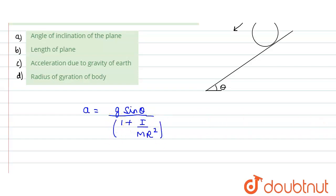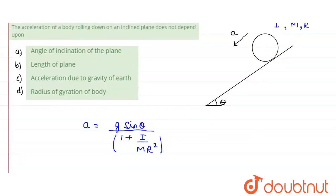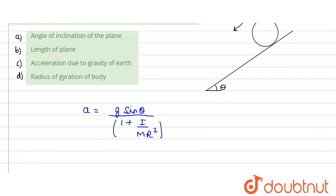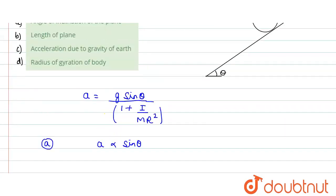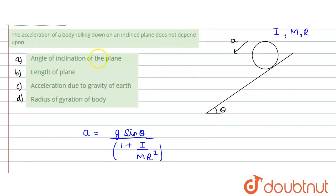Now we need to find whether acceleration is dependent upon the angle of inclination. We can see that acceleration is directly proportional to sine of theta — not proportional to theta itself, but to sine of the angle. So yes, it is dependent on the angle. We need to find what it does NOT depend on, so option A cannot be our answer.